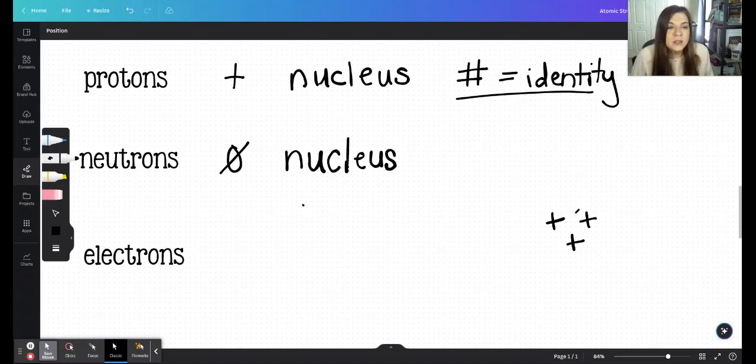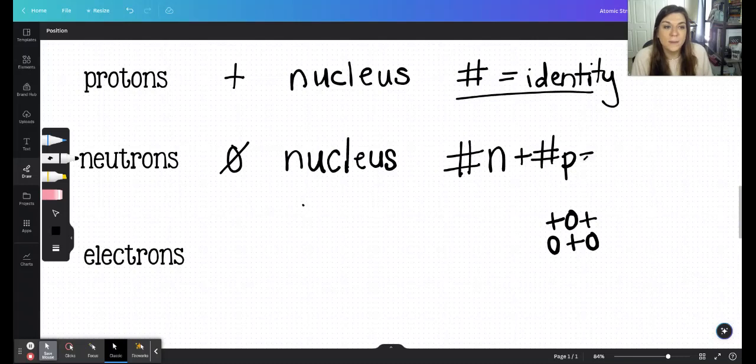So the neutrons kind of sandwich in between these things to prevent them from just popping open and repelling each other to the point where atoms can't exist. So the number of neutrons is not going to be specific. Carbon sometimes has six neutrons, sometimes it has seven neutrons, and sometimes it'll even have eight neutrons. So the number of neutrons plus the number of protons is going to give us a number that is called the mass number.